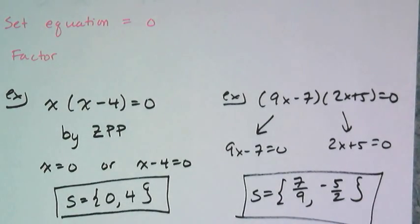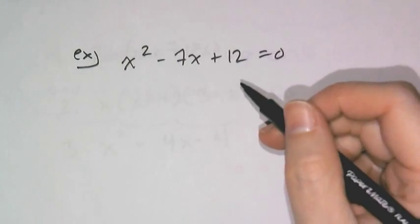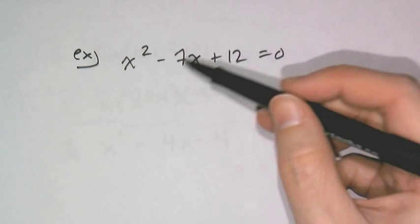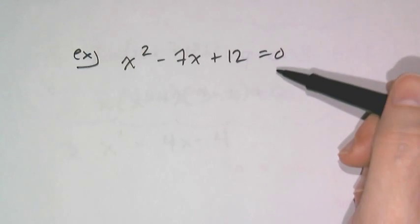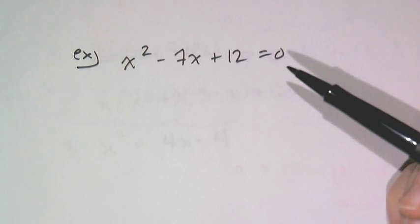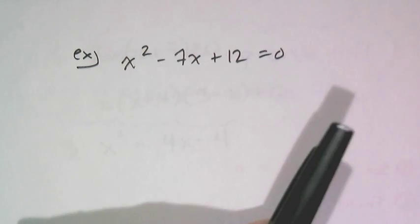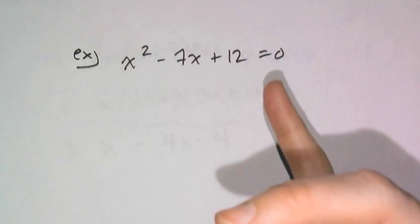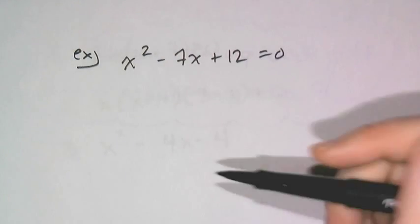So with this final example, let's go through the whole process. I have a quadratic equation I want to solve, and I have to check first that it's equal to zero so that I can eventually use the zero product property. And it is equal to zero, so yay. And now I want to see if I can factor this.